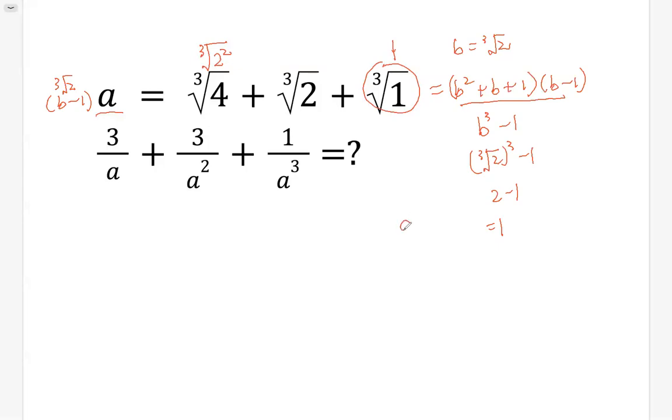So A times cubic root of 2 minus 1 equals 1. Then A equals 1 over cubic root of 2 minus 1. All right. So together, we simplified A into this form.